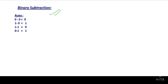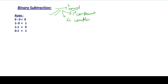Binary subtraction — basically, we have three methods. The first is normal subtraction. The second is 1's complement. And the third method is 2's complement. So, these are the three methods by which we can perform binary subtraction.